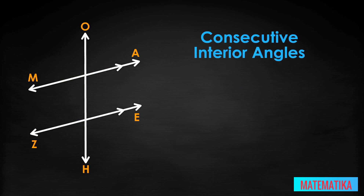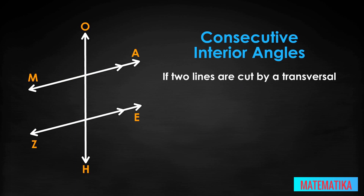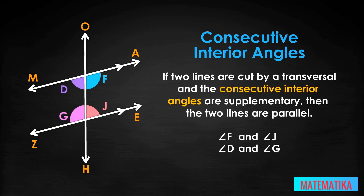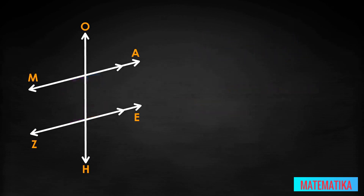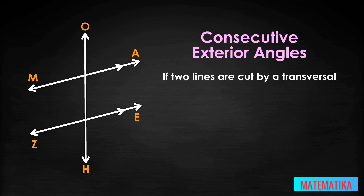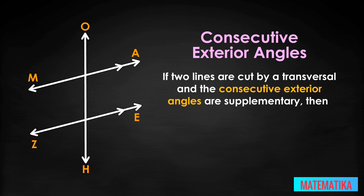The consecutive interior angle converse theorem states that if two lines are cut by a transversal and the consecutive interior angles are supplementary, then the two lines are parallel. As you may suspect, if a converse theorem exists for consecutive interior angles, it must also exist for consecutive exterior angles. The consecutive exterior angle converse theorem states that if two lines are cut by a transversal and the consecutive exterior angles are supplementary, then the two lines are parallel.